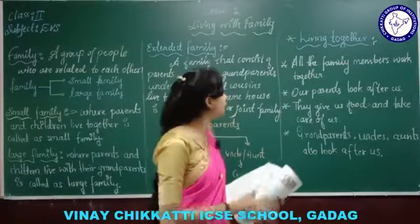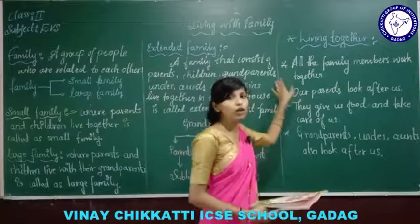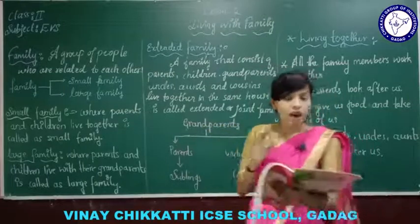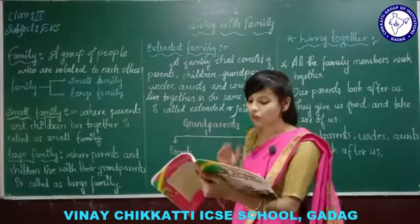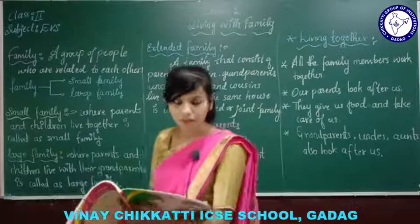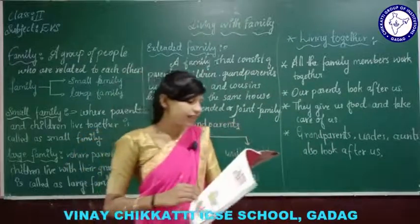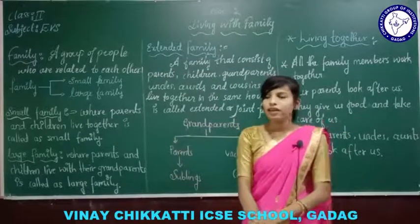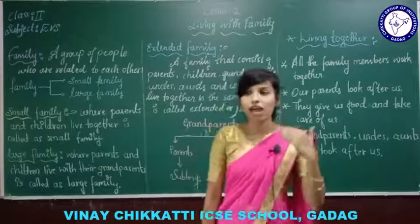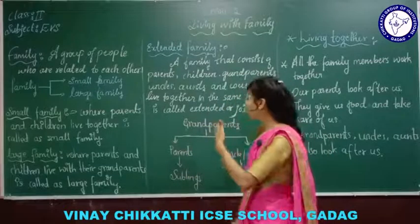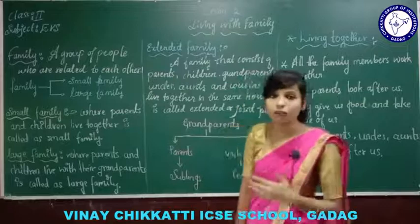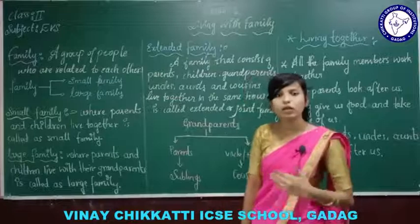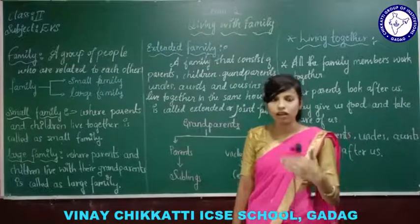Living together — in a family all the members work together. Our parents look after us; they give us food, clothes, and shelter. They take care of us when we fall ill. In an extended family, if we are living with auntie, uncle, and cousins, then we will work together and we should love each other.